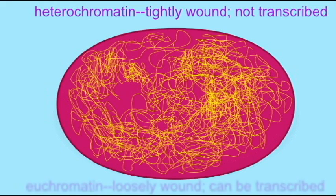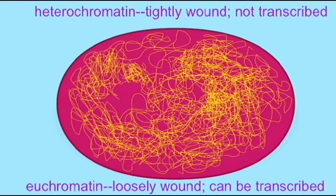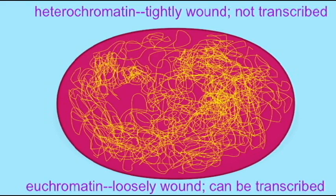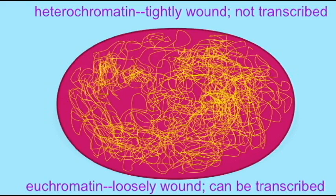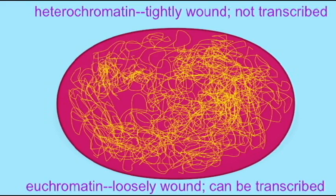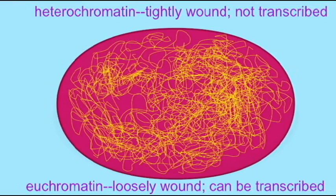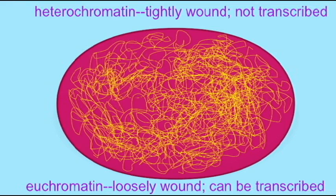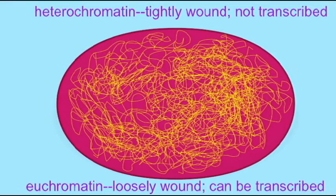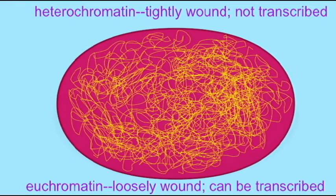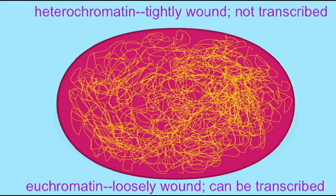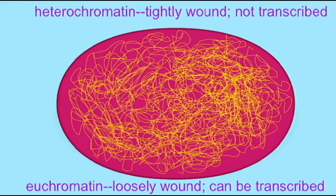Or DNA may exist in the form of heterochromatin, in which it is so tightly wound that RNA polymerase cannot access these promoters and transcription cannot begin.